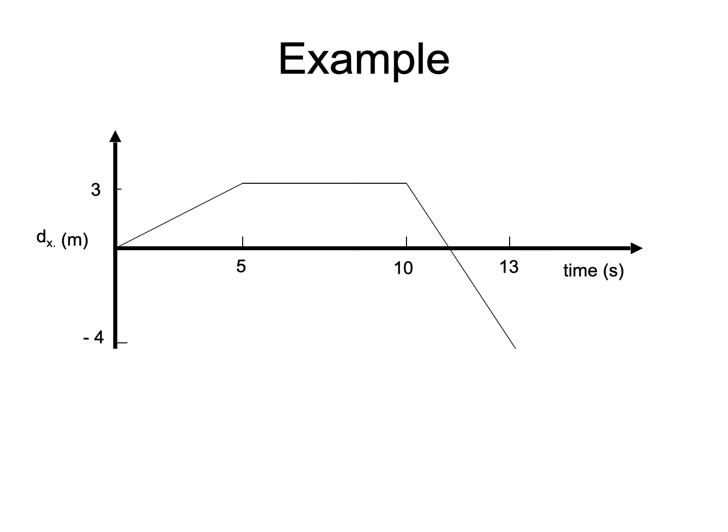Let us do a numerical example. Here is a component of position versus time graph, where the reference direction was defined as being to the right. We will evaluate the x-component of the average velocity over various time intervals.